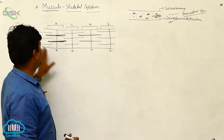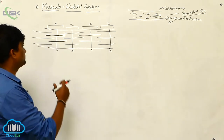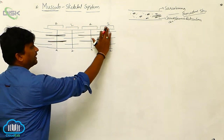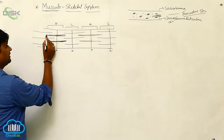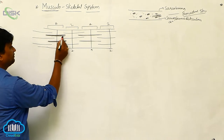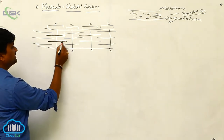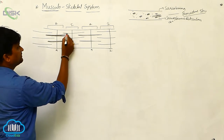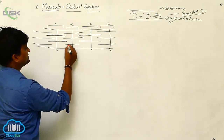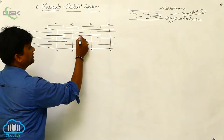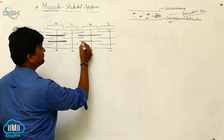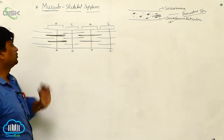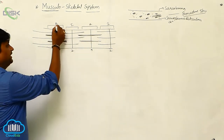Now let us look at the ultrastructure of the muscle. We have the A band and the I band alternating. The A band consists of thick filaments — we call these myosin filaments. The I band consists of thin filaments — we call these actin filaments. These myosin and actin filaments are alternatively arranged.